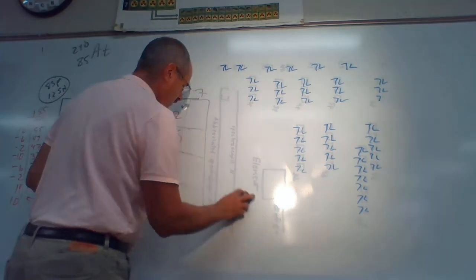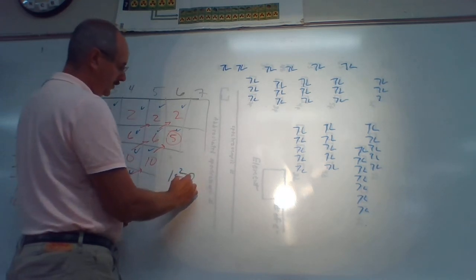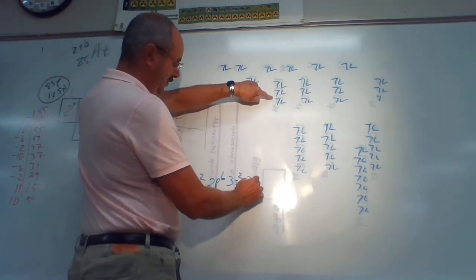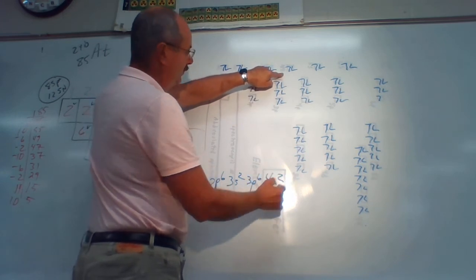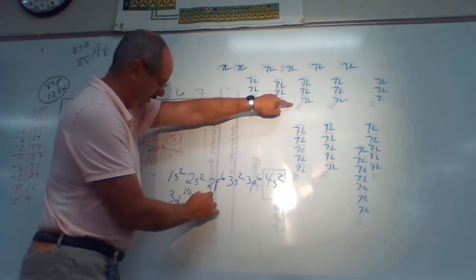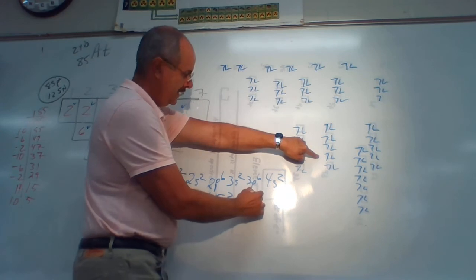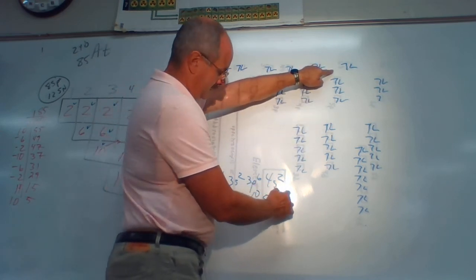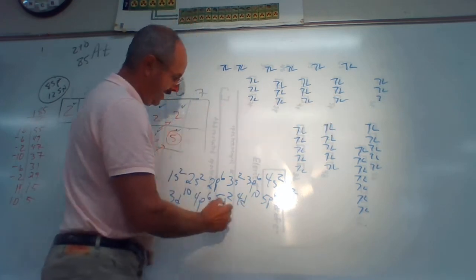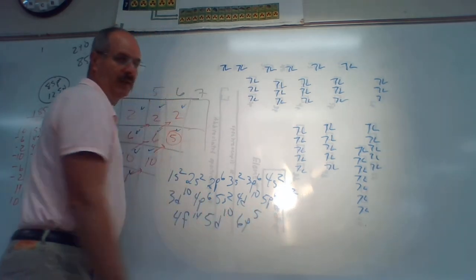Now the spectroscopic numbers: 1s2, 2s2, 2p6, 3s2, 3p6, 4s2 — then jumping down to 3d10, 4p6, 5s2, 4d10, 5p6, 6s2 — then all the way down to 4f14, 5d10, and then 6p5. Those are my spectroscopic numbers for astatine.